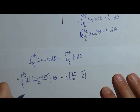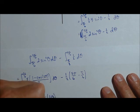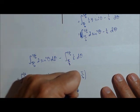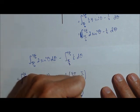Now here, those 2's will cancel, and so we've got pi over 6 to 5 pi over 6 of 1 minus cosine of 2 theta d theta minus 1 half times 4 pi over 6.